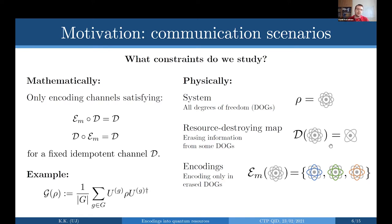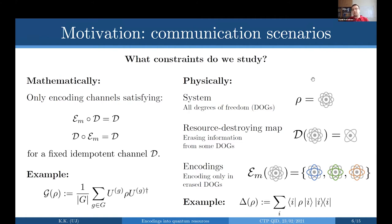A simple example is the completely dephasing map as resource-destroying map: it sends every state to a diagonal state, so the corresponding allowed encodings are those that only encode information in the phase degrees of freedom — the off-diagonal elements of the density matrix.